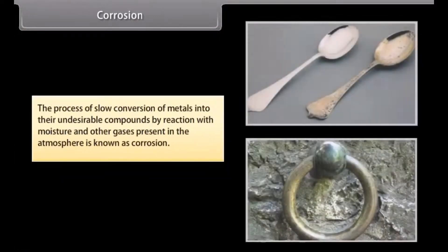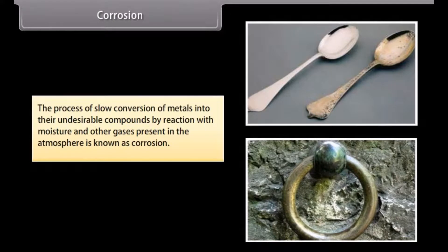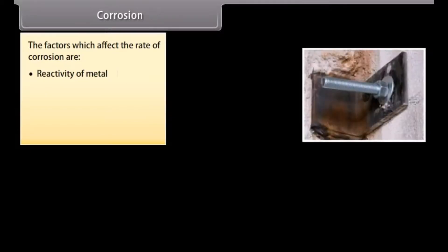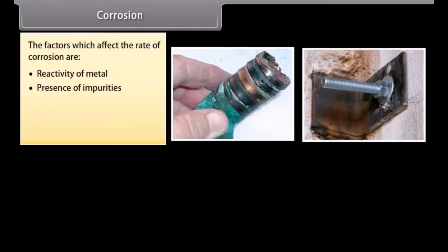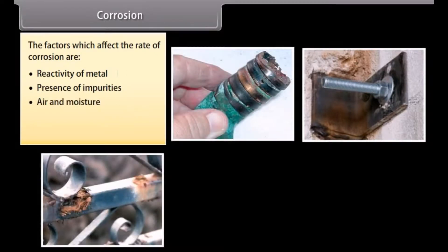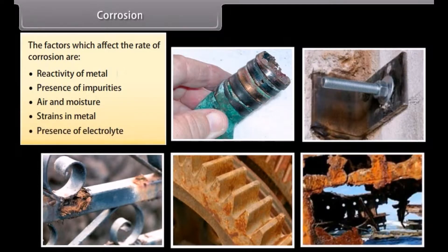Corrosion. The process of slow conversion of metals into their undesirable compounds by reaction with moisture and other gases present in the atmosphere is known as corrosion. For example, silver gets tarnished, iron rusts, copper develops green coating on its surface, and lead loses its luster. The factors which affect the rate of corrosion are: reactivity of metal, presence of impurities, air and moisture, strains in metal, and presence of electrolyte.